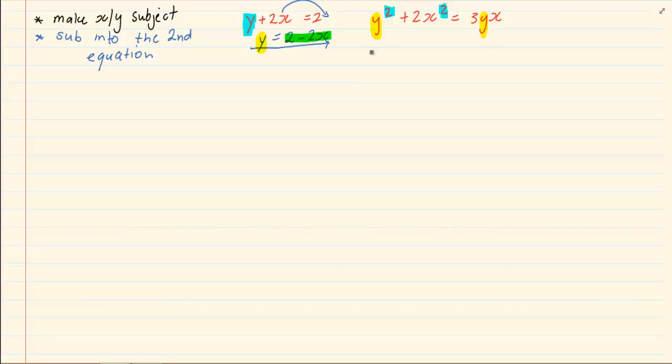So I would now have, open brackets, 2 minus 2x all squared. My y is removed. Plus, 2x squared is equal to 3 into 2 minus 2x into x.